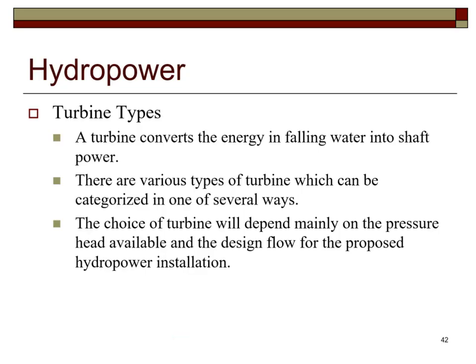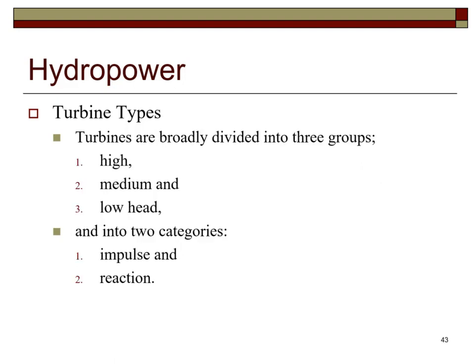A turbine converts the energy in falling water into shaft power. There are various types of turbines, and the choice depends mainly on the pressure head available and the design flow for the proposed hydropower installation. Turbines are broadly divided into three groups—high, medium, and low head—and into two categories: impulse and reaction.